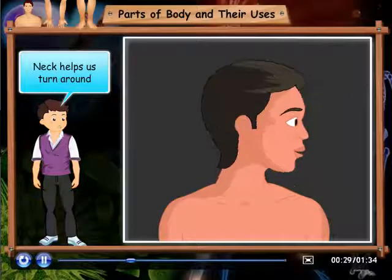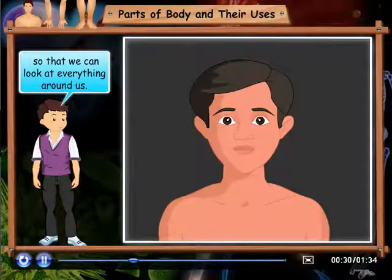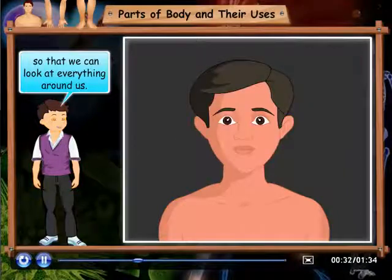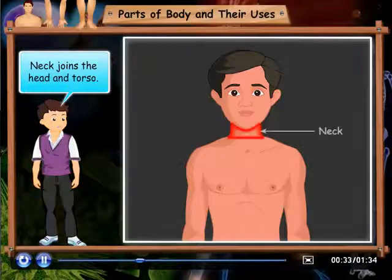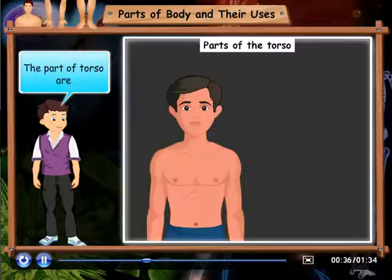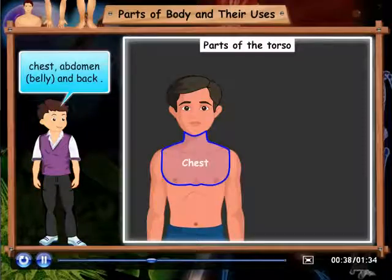Neck helps us to turn around so that we can look at everything around us. Neck joins the head and torso. The parts of torso are chest, abdomen,